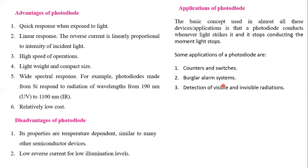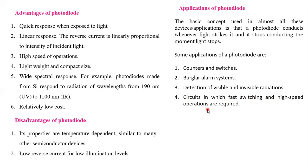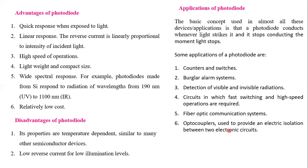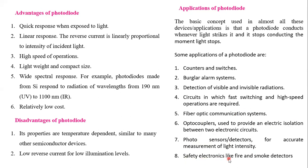Photodiodes are also used for detection of visible and invisible radiation, since they are light-sensitive and respond to a wide range of wavelengths. They are used in circuits requiring fast switching and high speed of operation. In fiber optic communication, light signals are transferred through optical fiber cables and the photodiode detects those signals. Optocouplers use photodiodes to provide electrical isolation between two electronic circuits. They are also used as photo sensors and photo detectors for accurate measurement of light intensity, and in safety electronics such as fire and smoke detectors.